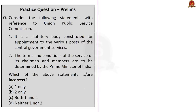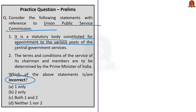The next question is about UPSC. Two statements are given and we are asked which are incorrect. Statement 1 says UPSC is a statutory body constituted for appointment to various posts of central government services — this is incorrect because UPSC is a constitutional body. Statement 2 says the terms and conditions of the chairman and members are to be determined by the Prime Minister of India — this is also incorrect because it is to be determined by the President of India. Both statements are incorrect, so the correct answer is Option C.